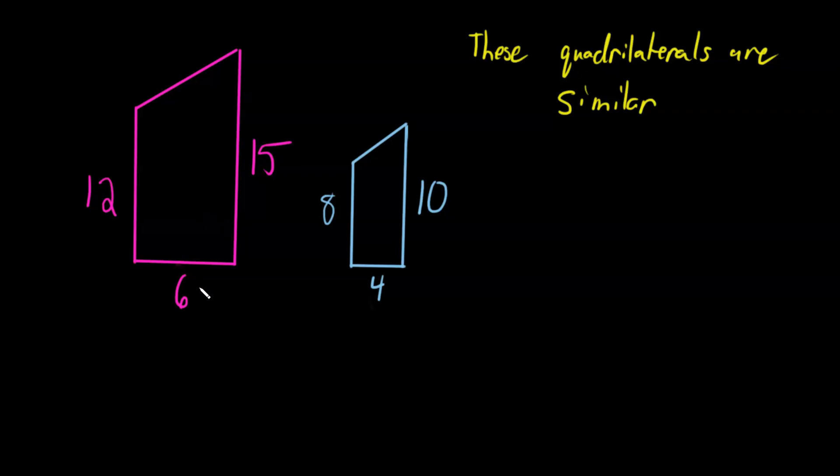But there is a scale factor going from this pink one to the blue one which makes it smaller. We will find out what that scale factor is, but for right now, all that we're going to do is talk about what it means for two shapes to be similar to each other.